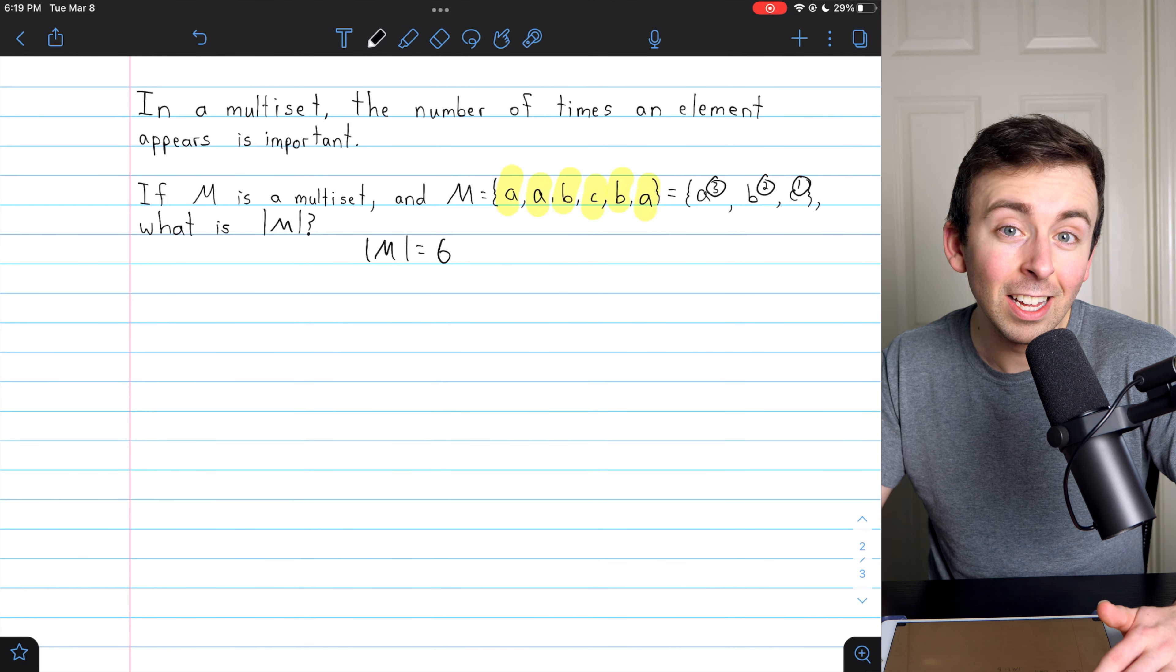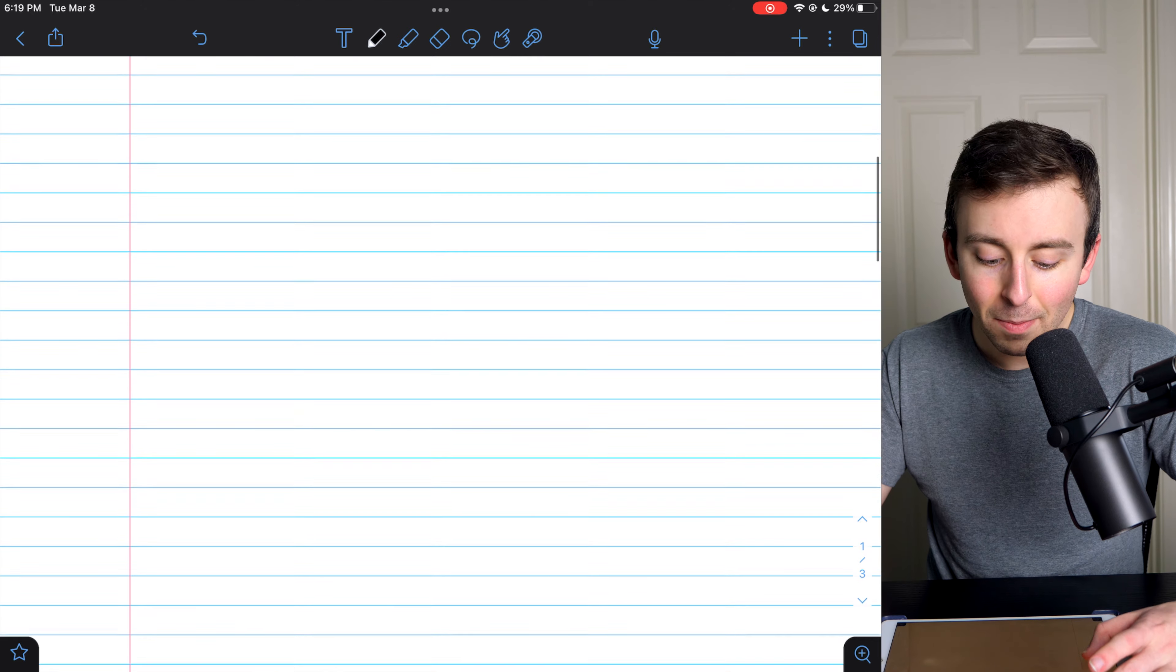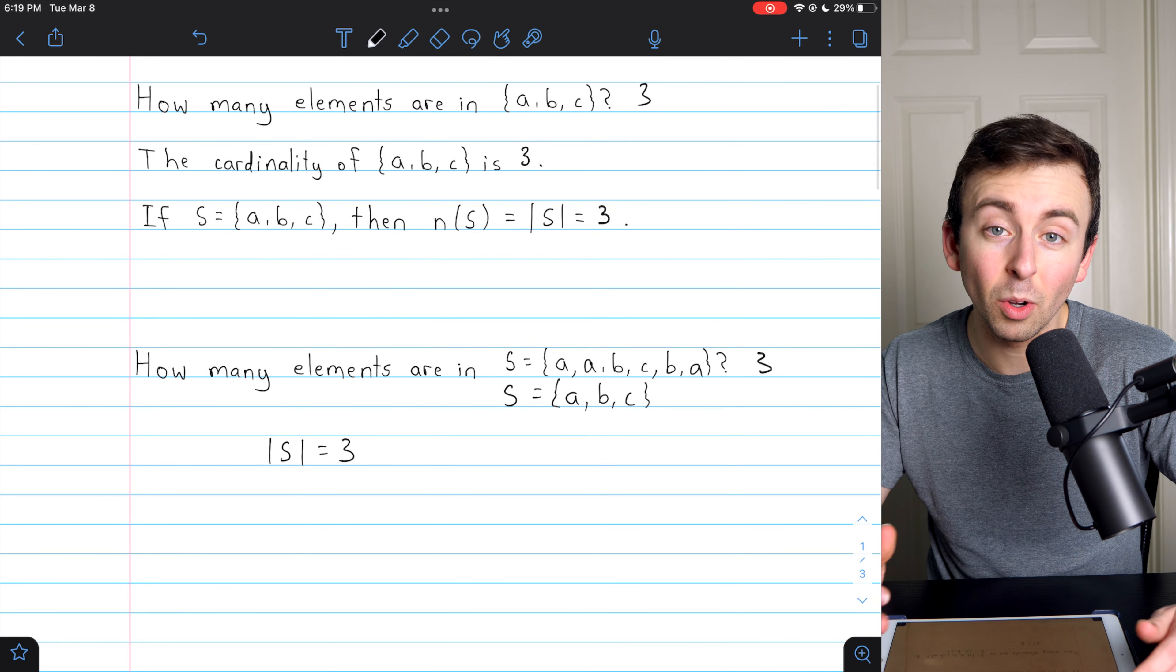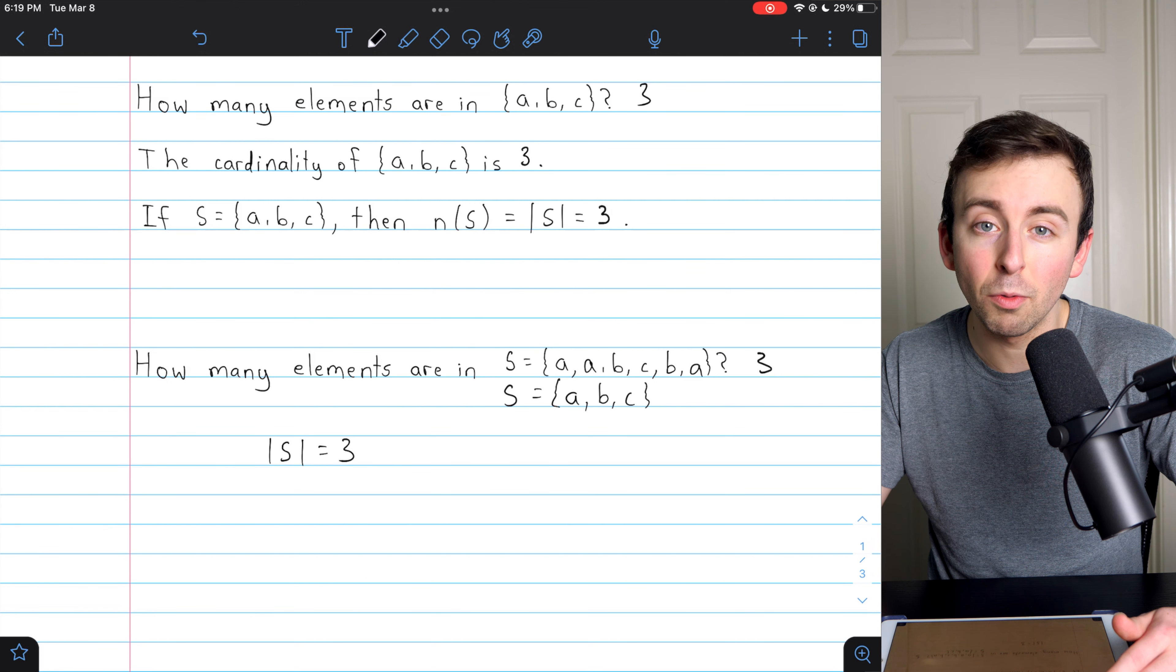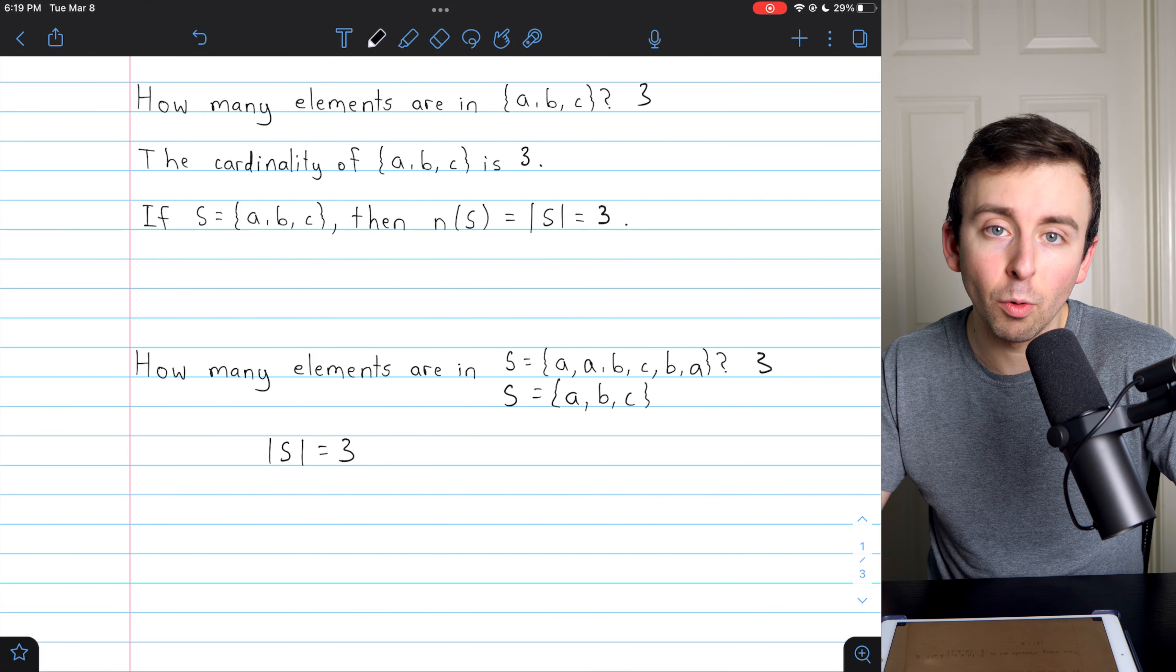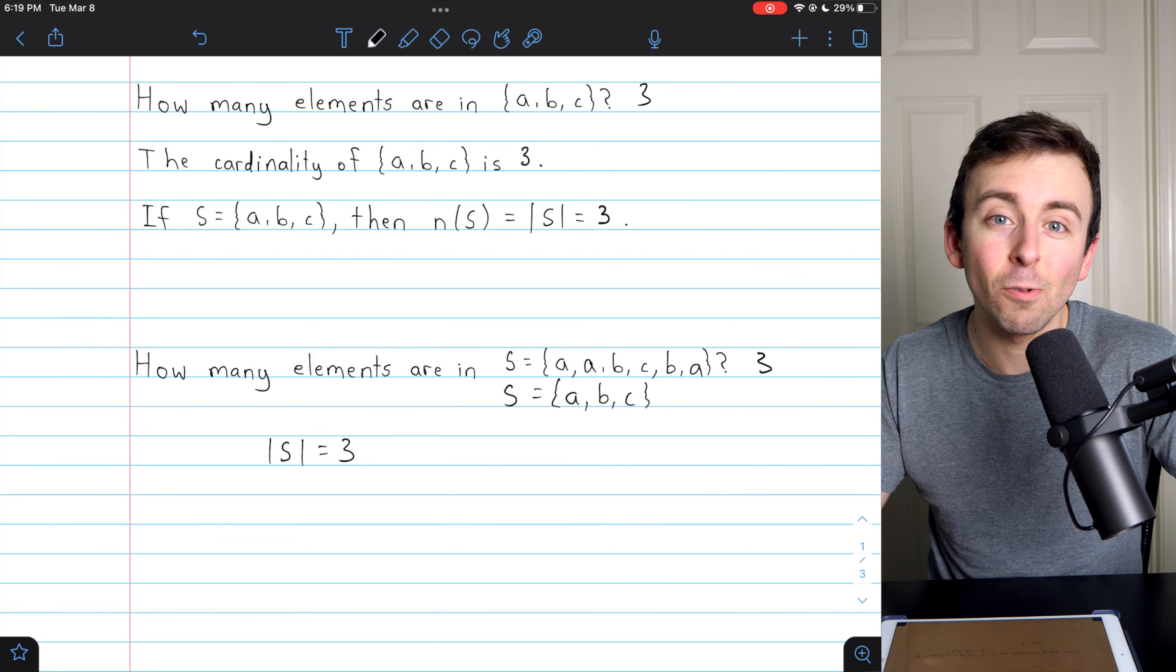So that's how multisets work. Just a little taste of it anyways. But with normal sets, repetition is not important. So if you've got a set that's written with repeated elements, you should really just rewrite it without the repetition because that's what the set really is.